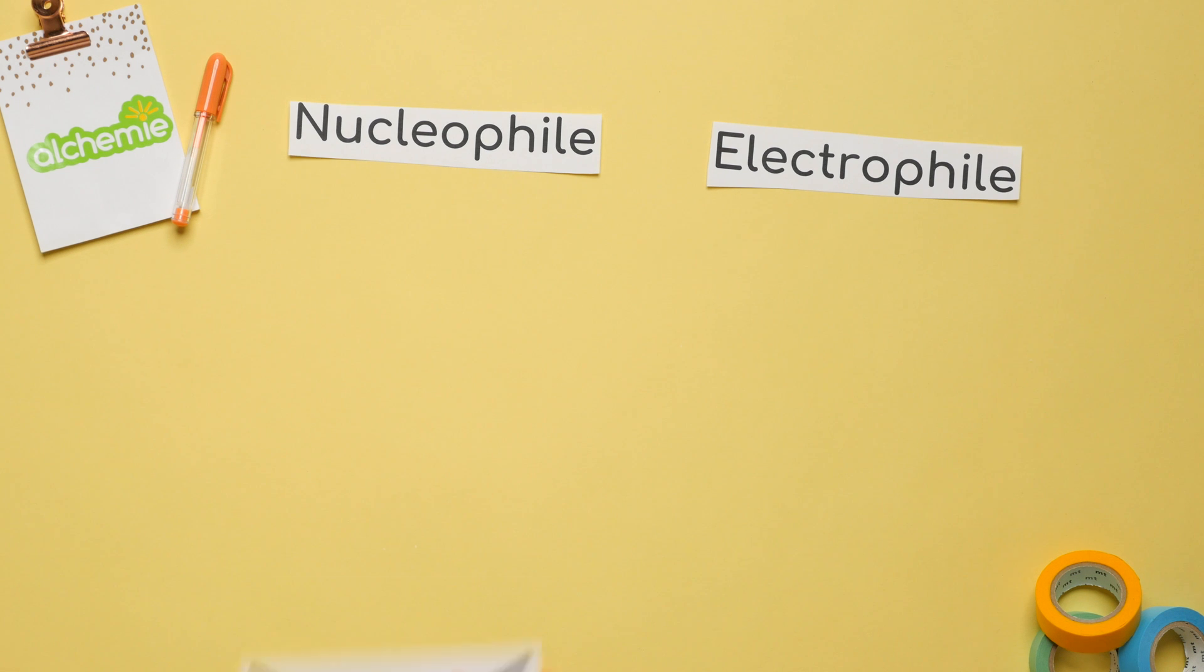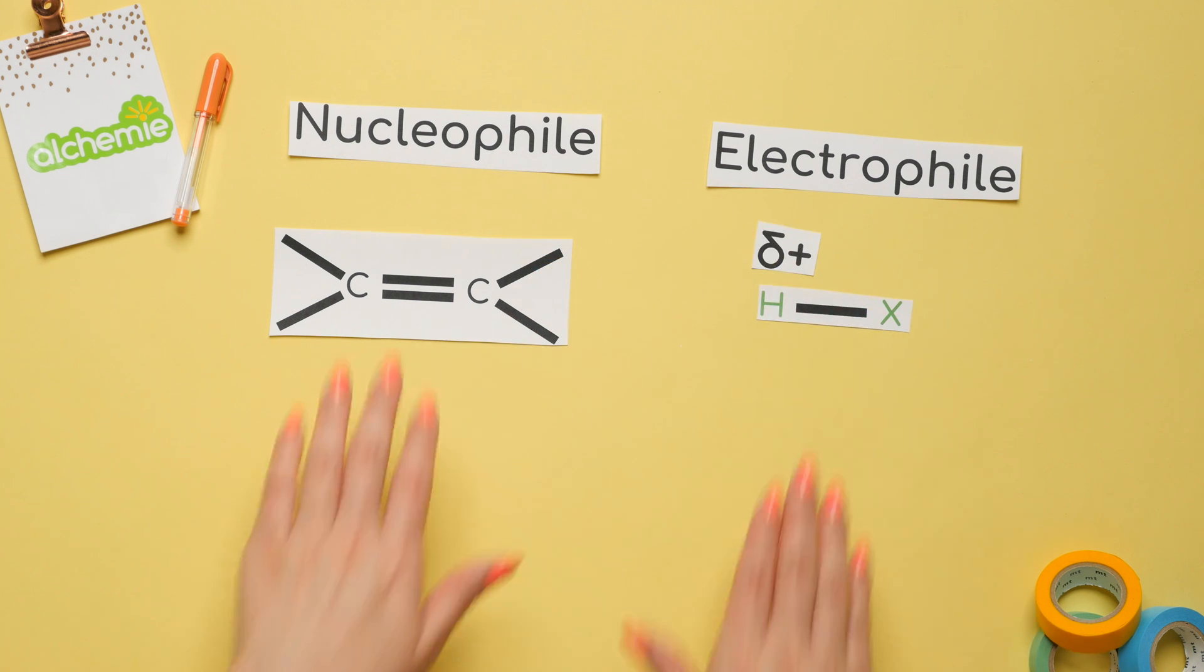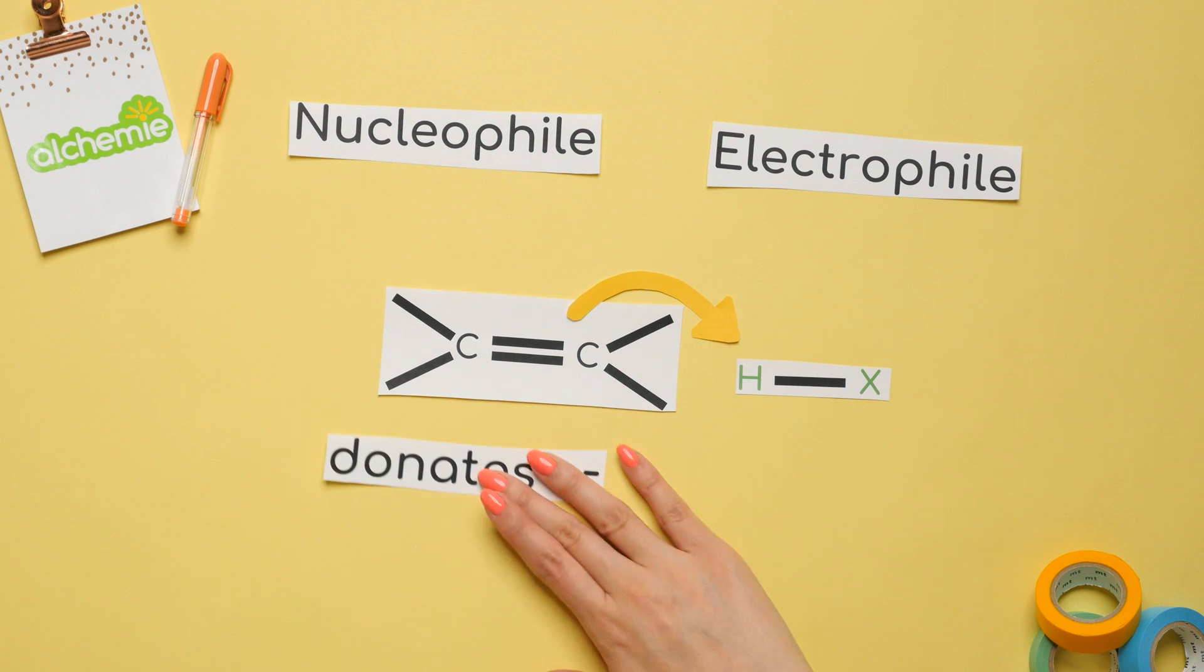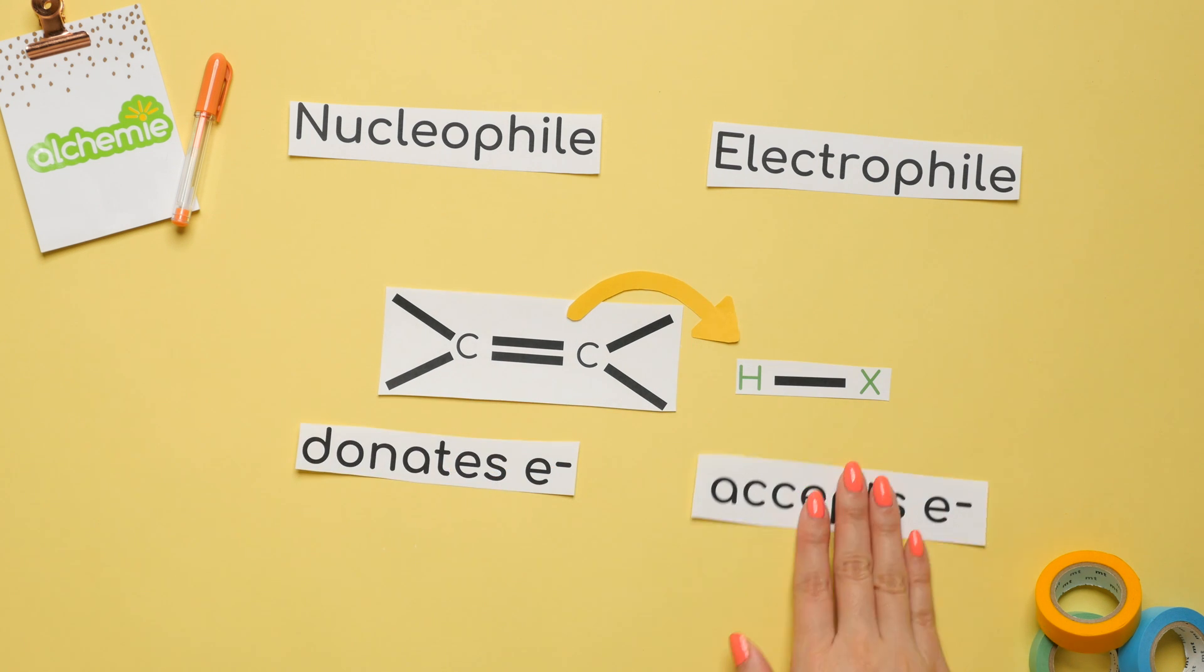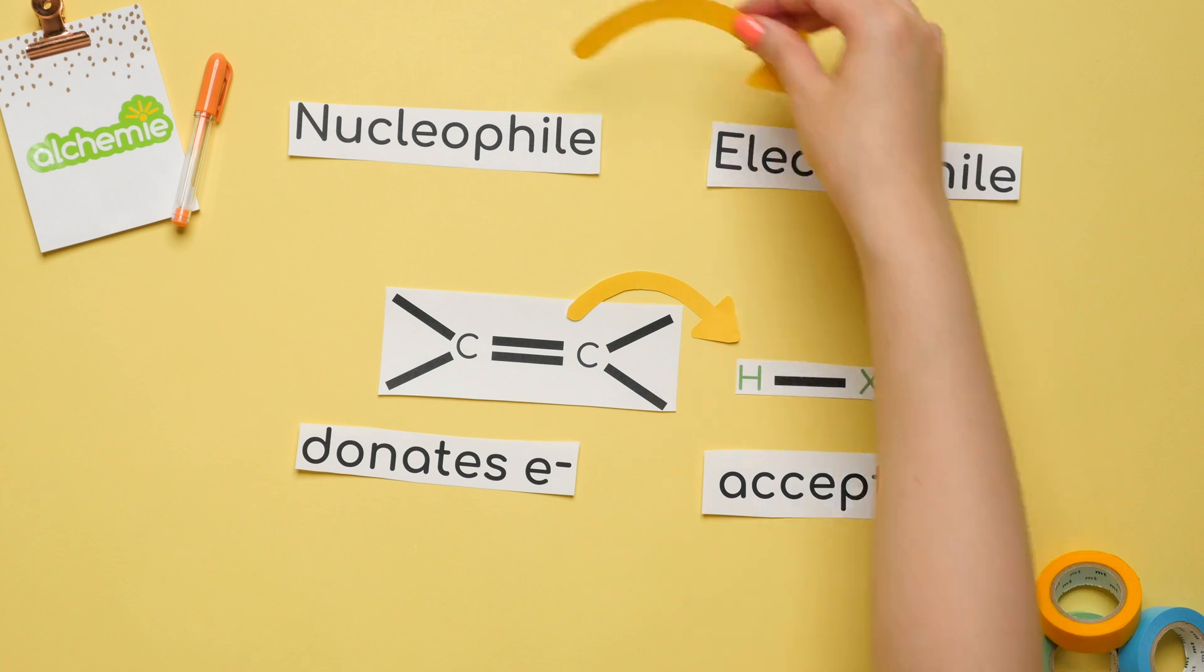You know something is a nucleophile because it has electrons or a negative charge, while an electrophile will have a partial or full positive charge. A nucleophile will donate a pair of electrons, while an electrophile will accept a pair of electrons. Remember that electrons flow from nucleophile to electrophile.